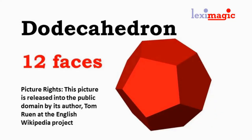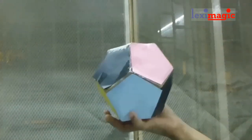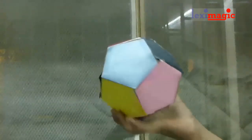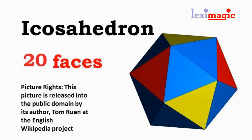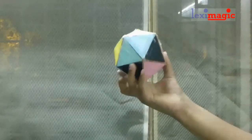The next is the twelve-faced dodecahedron in which each of the faces is a regular pentagon. The next Platonic solid is the twenty-faced icosahedron in which each of the faces is an equilateral triangle. Thank you very much.